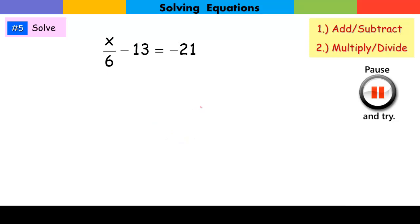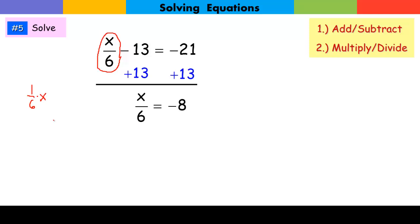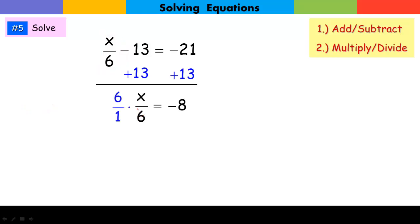For the next problem, the variable term is on the other side. Adding 13 to both sides, the coefficient could be seen as 1 sixth, or equivalently x divided by 6. Either way, to get rid of it I multiply both sides by 6 over 1. The 6s cancel to give a coefficient of 1 on the left, and multiplying the right side by 6 gives x equals negative 48.